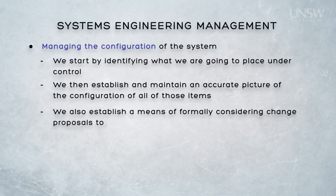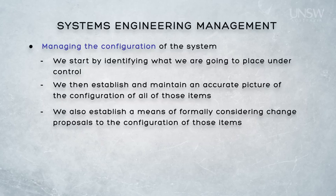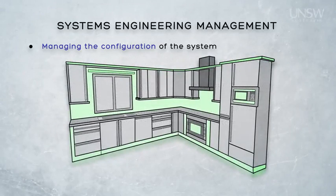Once we've identified what we are controlling, we then need to be able to communicate that to all parties. We do this by being able to communicate what the current configuration baseline is for any part of the system. For example, we would want to be able to see what the current agreed configuration of our kitchen appliances is and how this configuration has changed over time. This is called status accounting in configuration management.